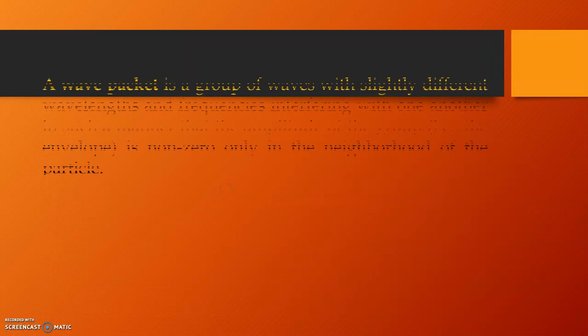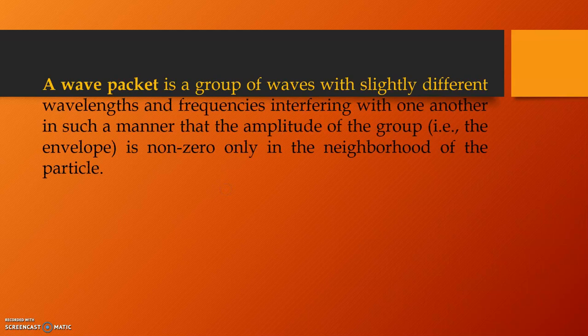This brings us to this recapitulation. A wave packet is a group of waves with slightly different wavelengths and frequencies, interfering with one another in such a manner that the amplitude of the group, i.e. the envelope, is non-zero only in the neighborhood of the particle.